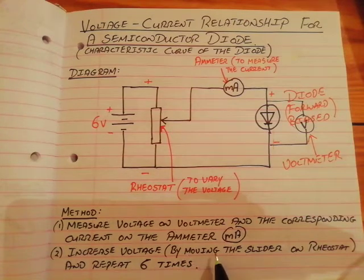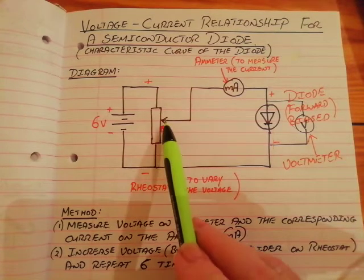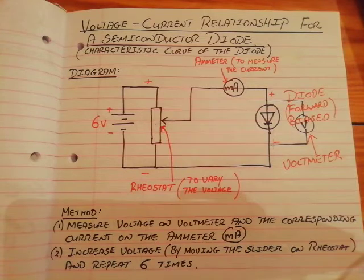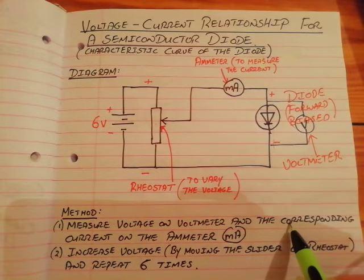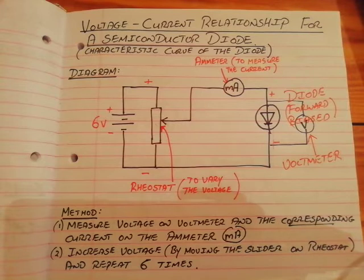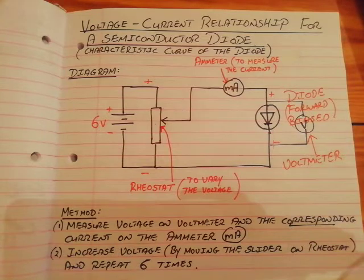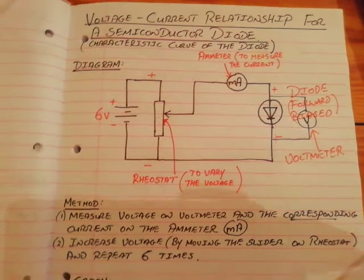Increase the voltage in equal steps by moving the slider on the rheostat, and get six different corresponding values of voltage and current. To see the relationship between voltage and current, you plot a graph.